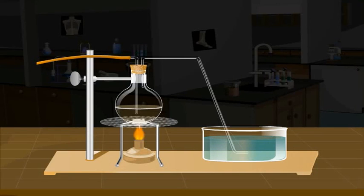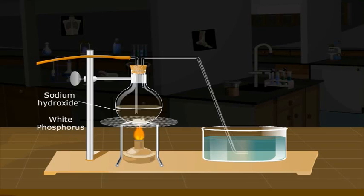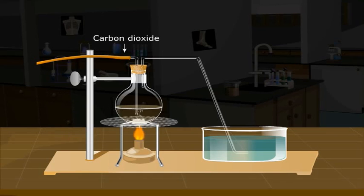This is done by heating white phosphorus with concentrated sodium hydroxide solution in a round bottom flask. Carbon dioxide is bubbled into the solution to provide an inert environment.